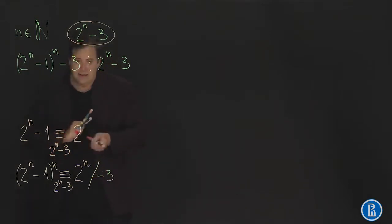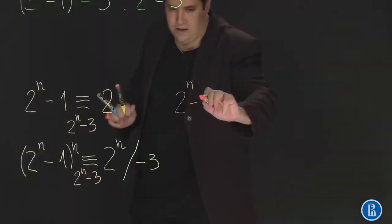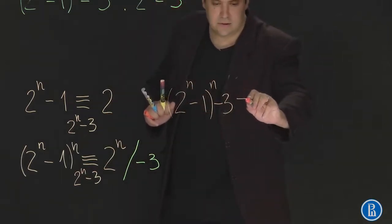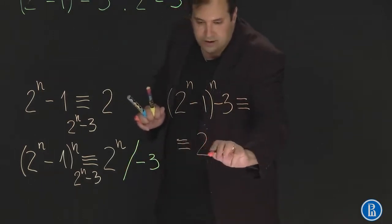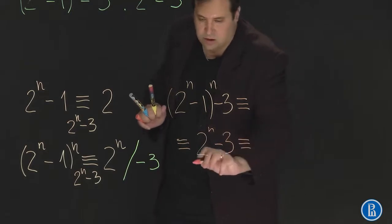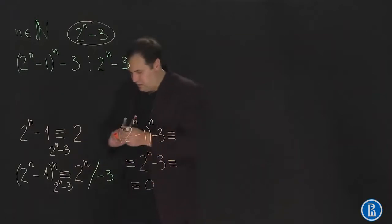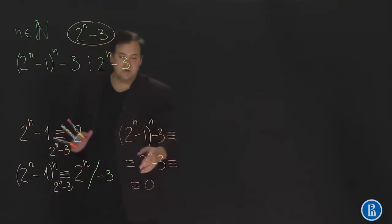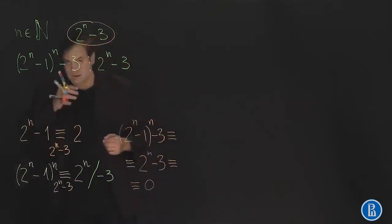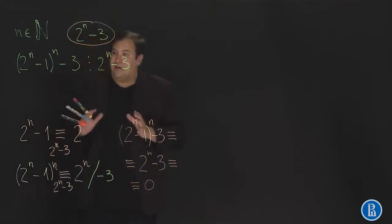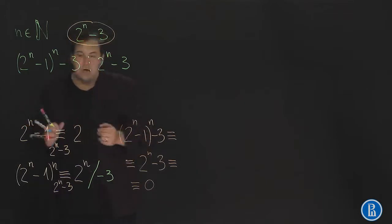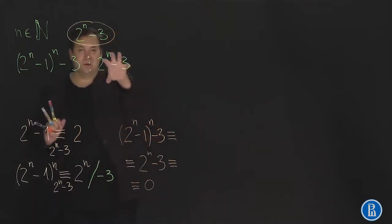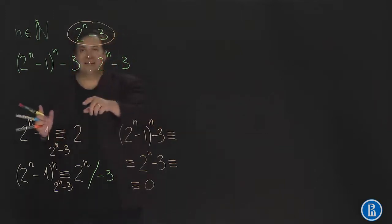We obtain that 2 to the power of n minus 1, raised to the power n, minus 3 is congruent to 2 to the power of n minus 3, which is obviously congruent to 0, where all these congruences are modulo 2 to the power of n minus 3. Thus, since this number is congruent to 0, it is divisible by 2 to the power of n minus 3. So, not knowing anything about these numbers, we can prove that one is divisible by the other using congruence modulo the appropriate modulus.